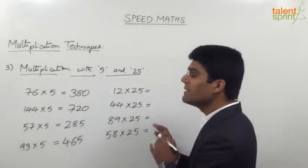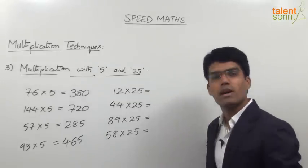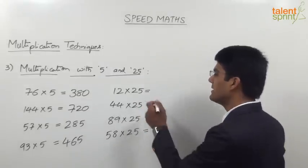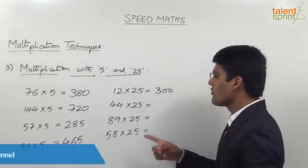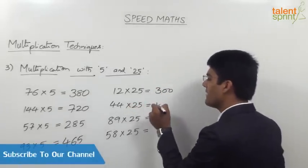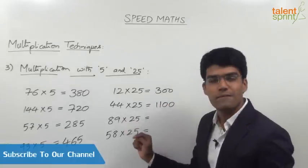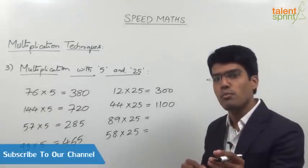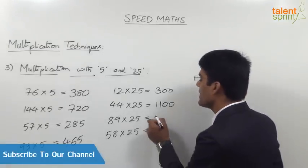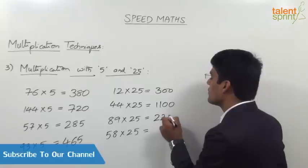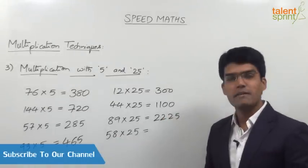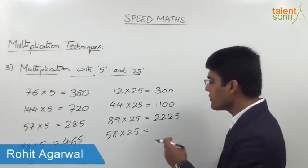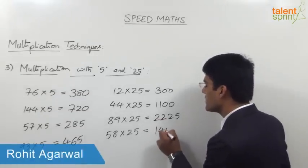Now for the multiplication-with-25 questions: 12 into 25 — one fourth of 12 is 3, so 3 into 100 is 300. 44 into 25 — 44 by 4 is 11, so the answer is 1100. 89 into 25 — 88 by 4 is 22, and 89 by 4 is 22.25, so 22.25 into 100 is 2225. 58 into 25 — 58 by 4 is 14.5, so 14.5 into 100 is 1450.